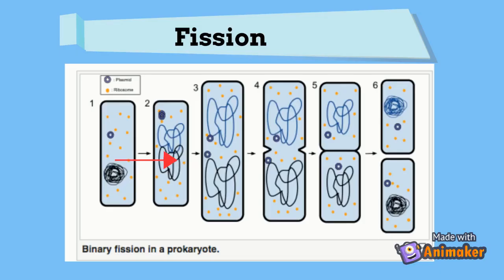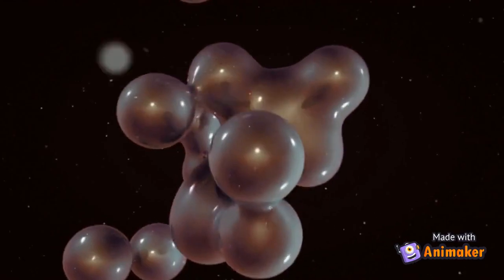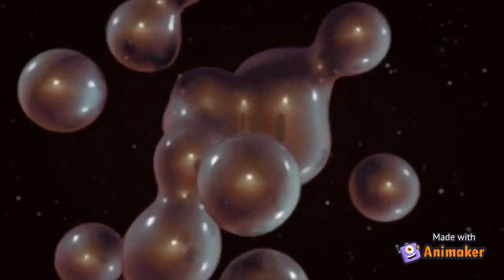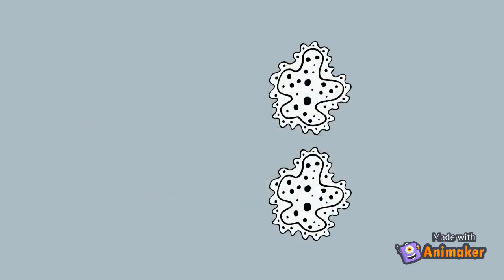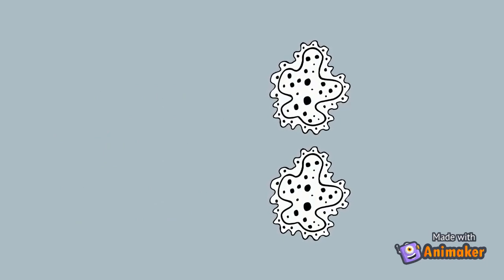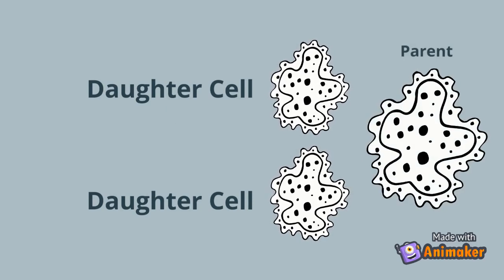Fission occurs in lower plants and bacteria, also in algae and protozoa. In this process, the cell divides after the DNA has divided. If the cell divides into two, it is called binary fission. The DNA or nucleus of the mature cell divides first, and then the cell divides into two daughter cells of almost the same size. The resulting cells contain identical genetic material as the parent cell.